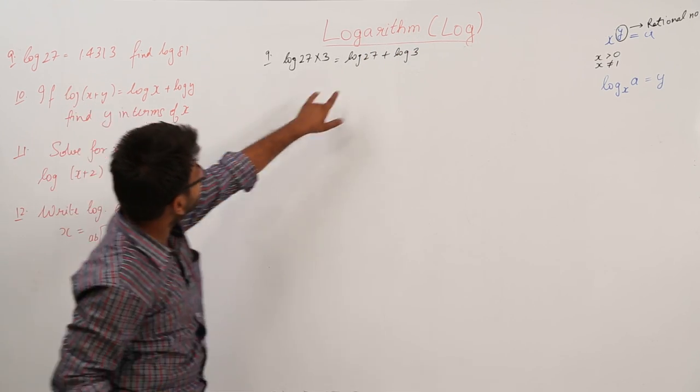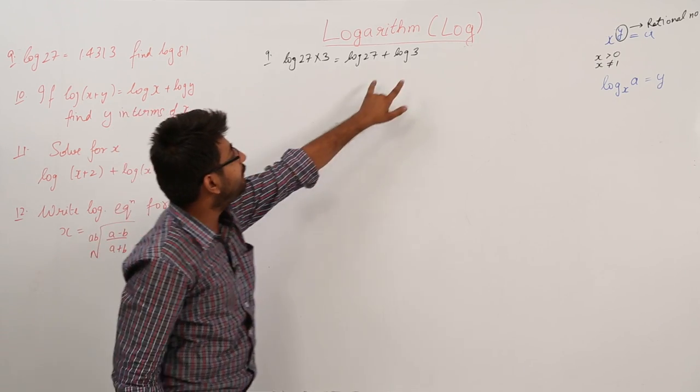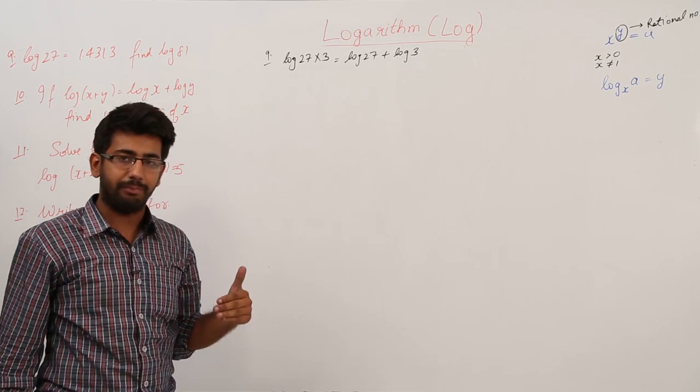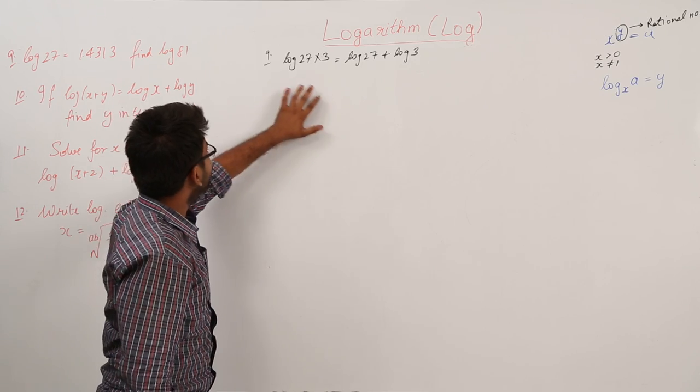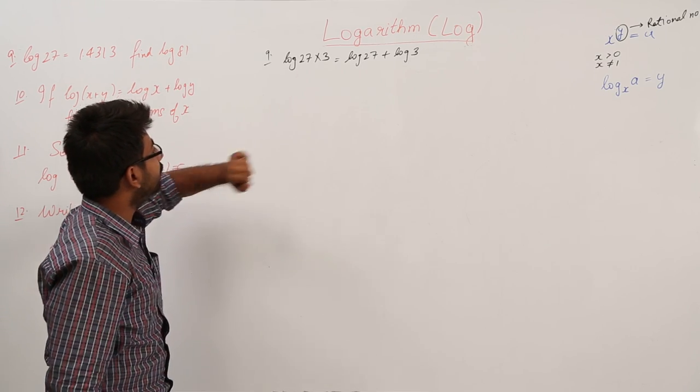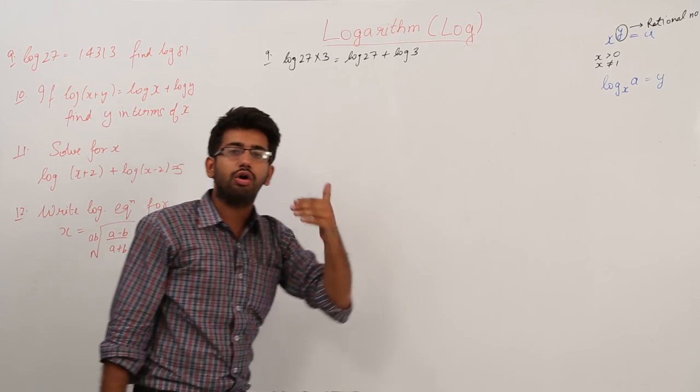Now, we have the value of log 27 but we do not have the value of log 3. So that means that to find out the value of log 81, we need the value of log 3.